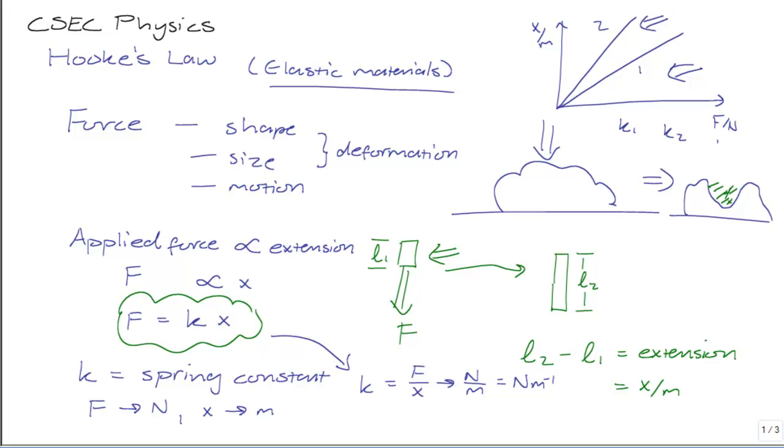So the graph corresponding to the material with the larger spring constant will have a much shallower slope, which makes sense because we did say that the gradient or slope of the graph is equal to 1 divided by k. Notice as well that if instead you had plotted f against x like this, then the gradient of this graph or the slope of the graph would be equal to your spring constant.